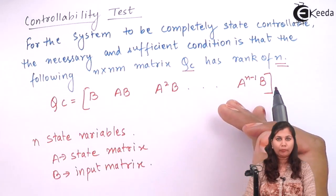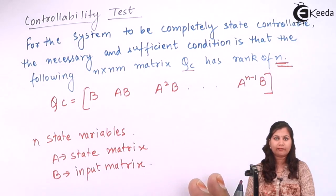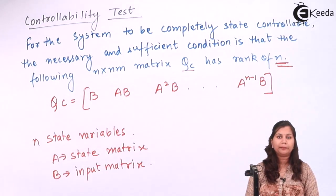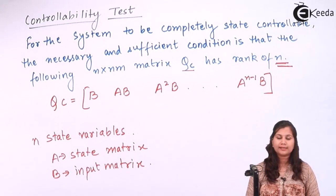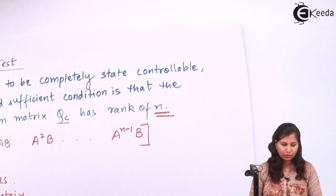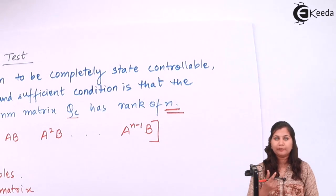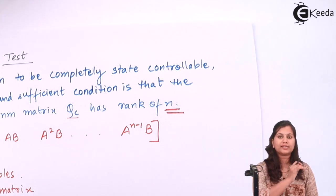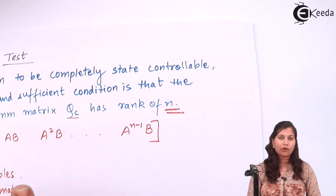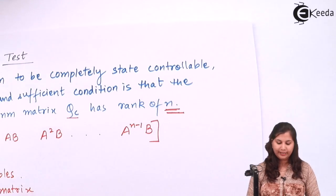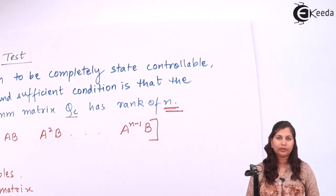Once you have completely formed this QC matrix, calculate its rank. If its rank is equal to N — the number of state variables — then the system is said to be completely state controllable. If there is no connection between a certain state and the input, then the system will have a rank less than N and that system is said to be uncontrollable.